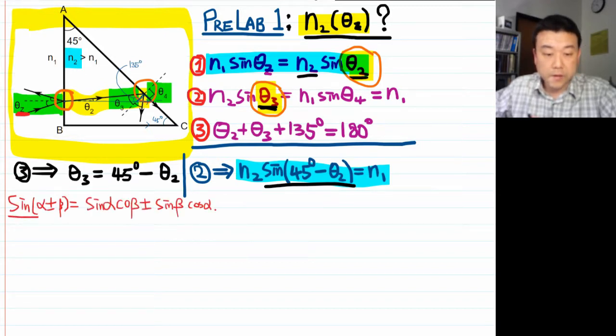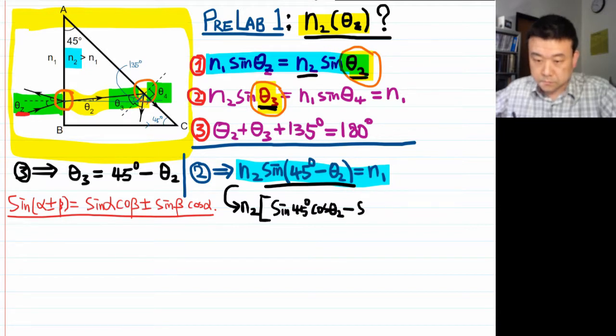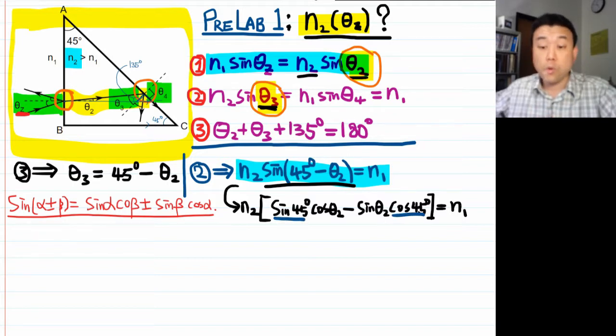This is the sine angle addition formula. Sine of alpha plus minus beta is equal to sine of alpha times cosine of beta plus minus times sine of beta cosine of alpha. So let me apply to that the underlined expression for sine of 45 degrees minus theta 2 and see what we get. We can use the fact that sine of 45 degrees and cosine of 45 degrees, they are both 1 over square root of 2 to simplify this.